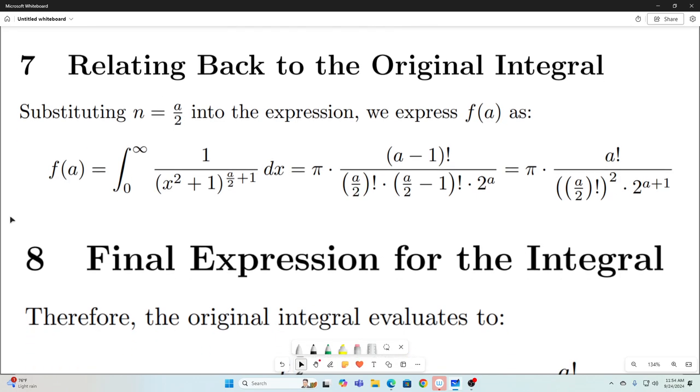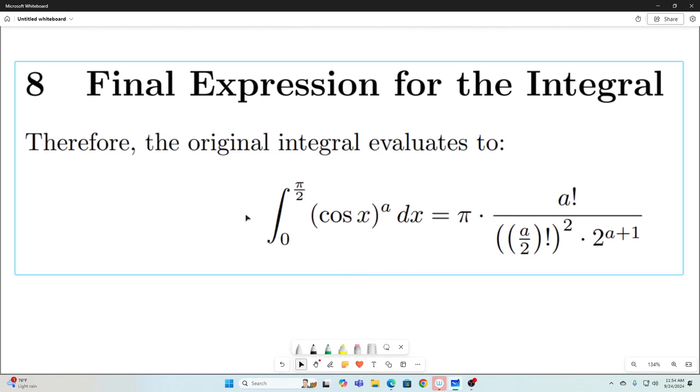So our final expression for the integral is this, the integral from 0 to pi over 2 of cosine x all raised to the a dx is equal to pi times a factorial divided by a over 2 factorial squared times 2 to the a plus 1.